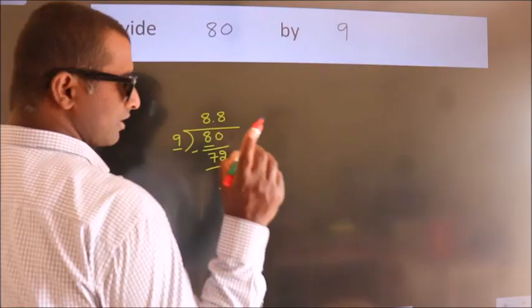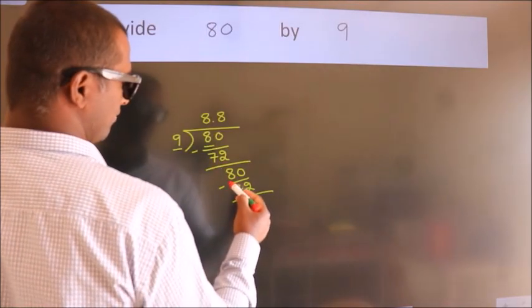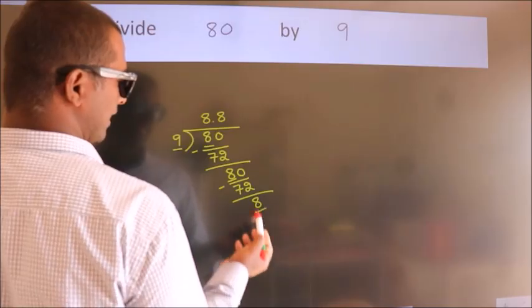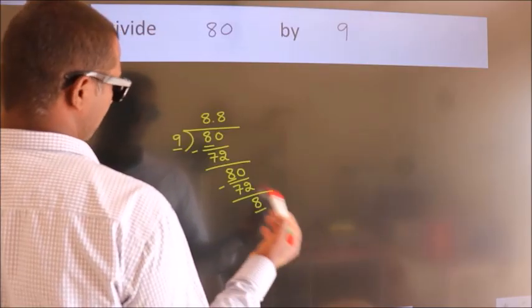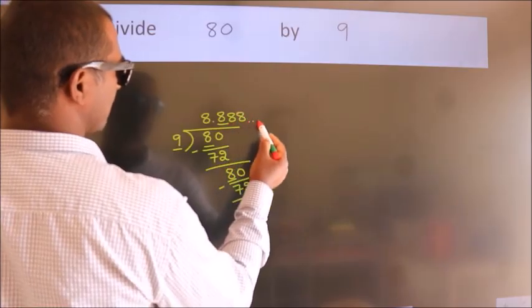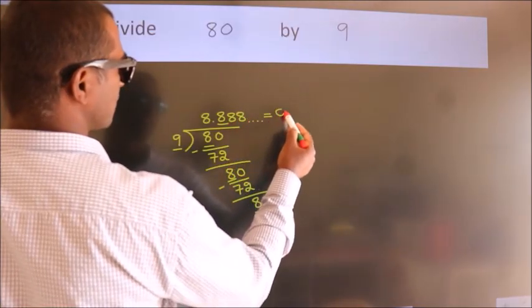Now, you observe. We had 8 here. And, we got 8 again. That means, this number keep on repeating. So, this is our quotient.